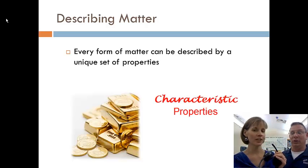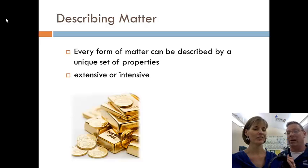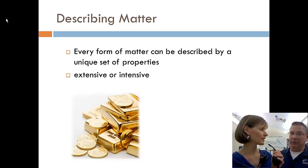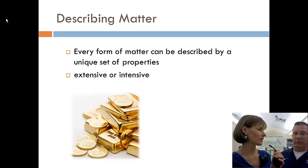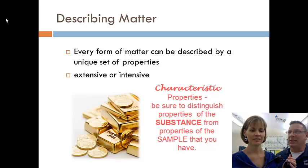Every form of matter can be described with a unique set of characteristic properties. That's an important term to know. Something's mass is not really unique nor characteristic. I could have 100 ounces of gold or just 1 ounce of gold. It would be grams because we are in chemistry. The mass of the sample of material I have really doesn't help me identify that material. You can't tell that something's gold because it's listed as 100 grams. Because it's not a characteristic property of that substance.